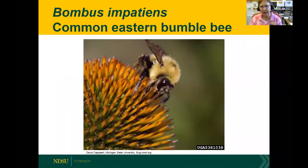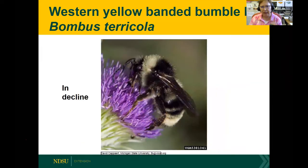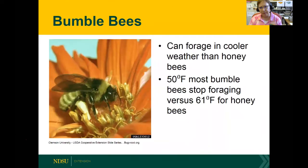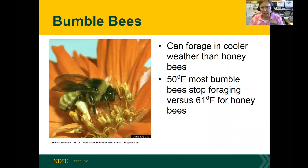The common eastern bumblebee, Bombus impatiens, is found here in North Dakota, and many bumblebees are in decline due to habitat destruction, diseases, and pesticide use. One advantage of bumblebees is that they can forage in cooler weather than honeybees — at 50 degrees Fahrenheit compared to 61 for honeybees — giving them an advantage in pollination. The behavior of a bumblebee is to pollinate the same species of flowers, which results in an increase in pollination for that particular group. They usually work one area rather than foraging widely.